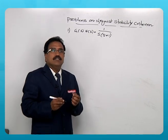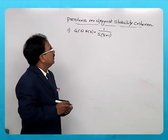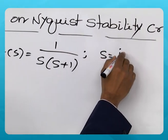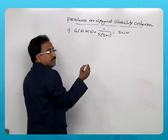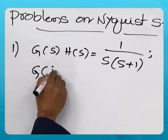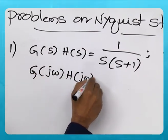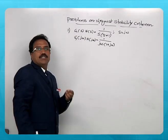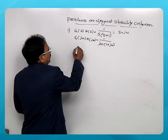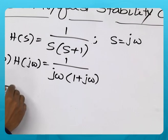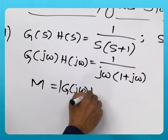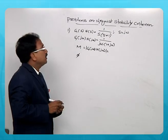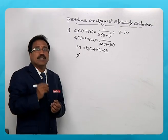We need to consider the Nyquist contour first, then mapping is to be done. The first step is to replace s by jω, so this becomes a sinusoidal transfer function equal to 1 / [jω(1 + jω)]. Once it becomes a sinusoidal transfer function, it consists of both a magnitude and a phase angle.